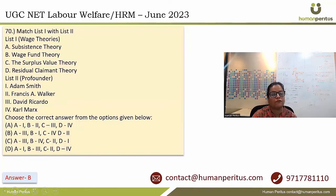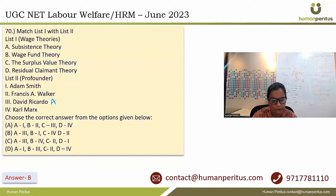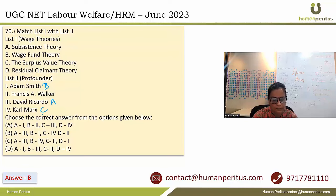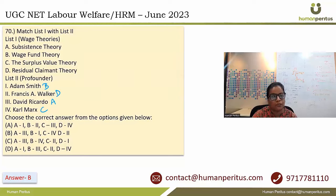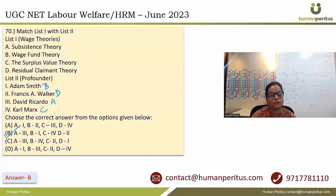Match wage theories with their proponents. Subsistence theory is associated with David Ricardo. Wage fund theory is associated with Adam Smith. Surplus value theory is given by Karl Marx. Residual claimant theory is given by Francis A. Walker. So A-3, B-1, C-4, D-2. Accordingly the answer is option B.